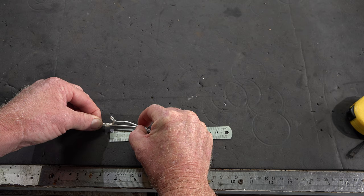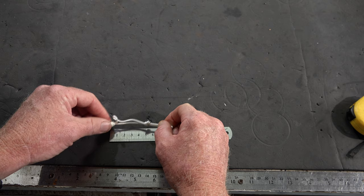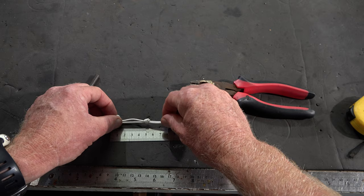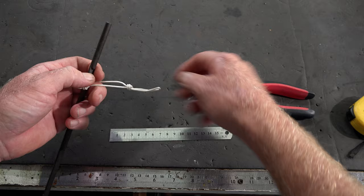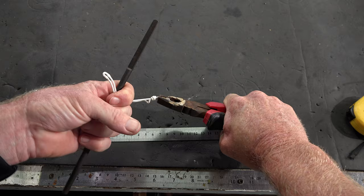Once you've got that nice and tight, hand tight, now you want to take these, put that through there and grab that and tighten. Slide that around, tighten both sides, and check your distance.